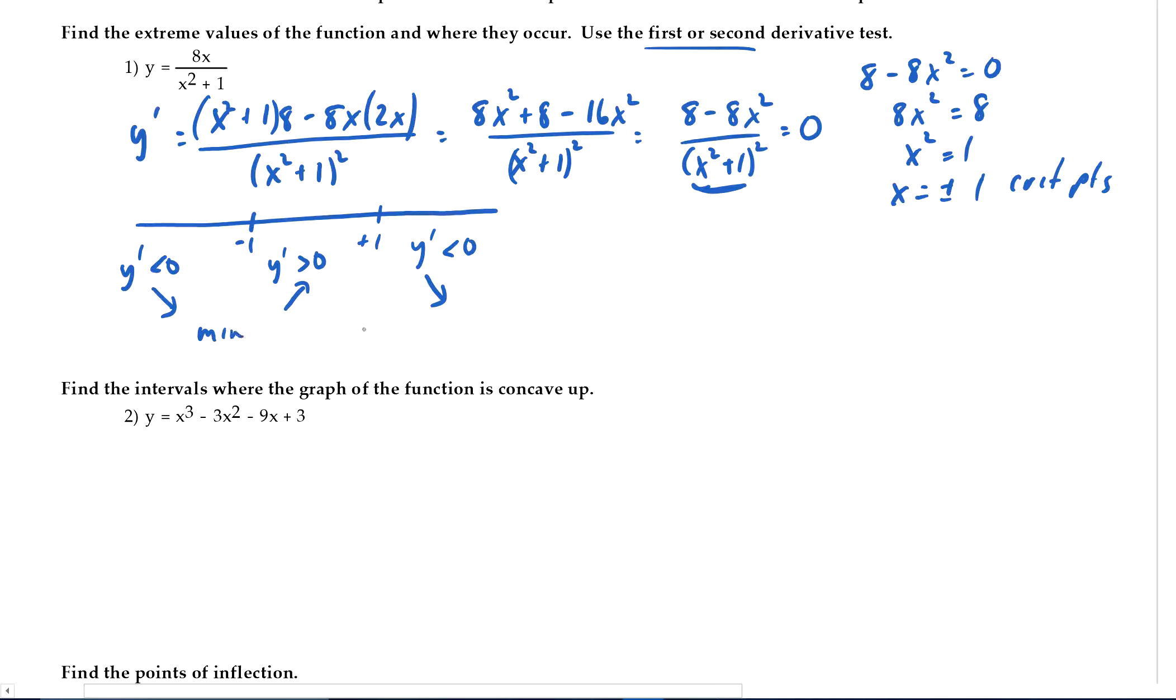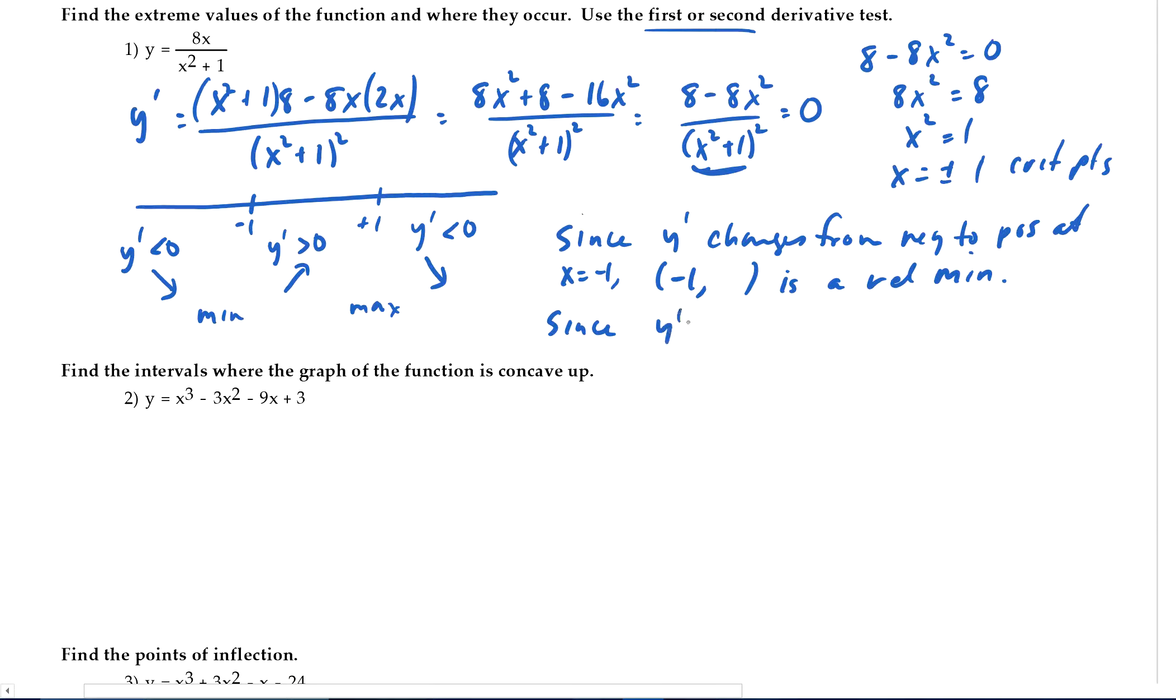So there's going to be a minimum and a maximum here. So, since y prime changes from negative to positive at x equals negative 1, negative 1 comma whatever the y value is, which we'll find out in a minute, is a relative minimum. And since y prime changes from positive to negative at x equals 1, 1 something is a relative max.